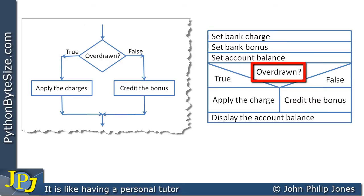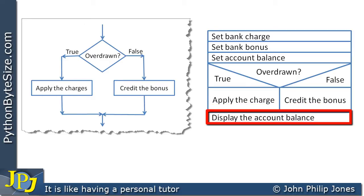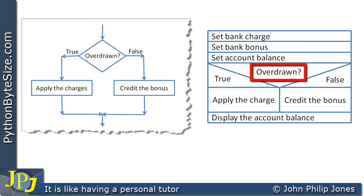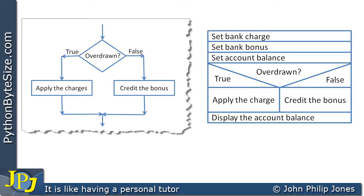When we get to the selection part, we ask: is the account overdrawn? If yes, it is true, and consequently we apply the charge, then display the account balance after the charge is applied. Another route through this solution is: set the bank charge, set the bonus, set the account balance, and if we are not overdrawn — false — we credit the bonus to the account and then display the account balance. There are two possible routes through the Nassi-Shneiderman chart, which represents the solution we convert into Python code.